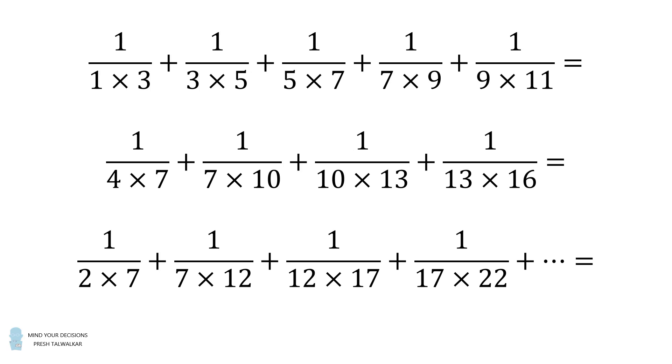The third sum is an infinite series: 1 divided by 2 times 7 plus 1 divided by 7 times 12 plus 1 divided by 12 times 17 plus 1 divided by 17 times 22 and so on.